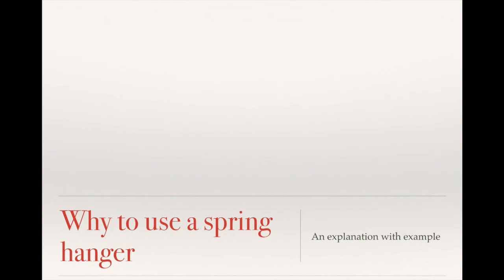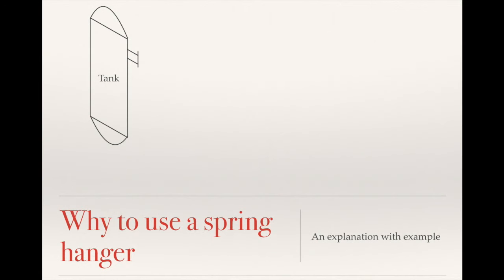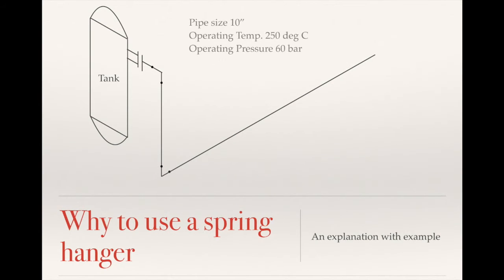I'll give you an example. Suppose we have a tank with a nozzle, and a pipe is routed from it. This is a 10-inch pipe with an operating temperature of 250 degrees Celsius and an operating pressure of 60 bar.